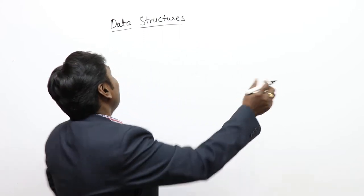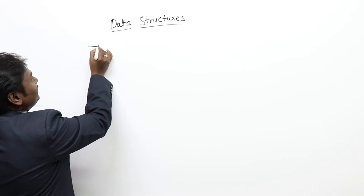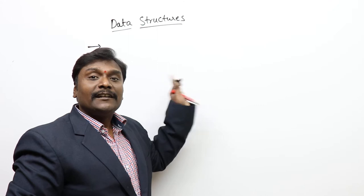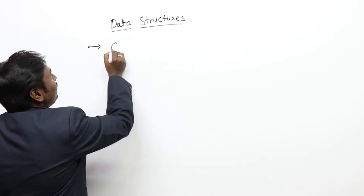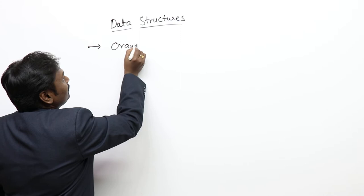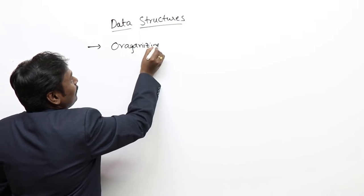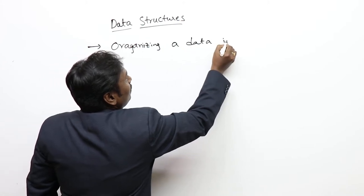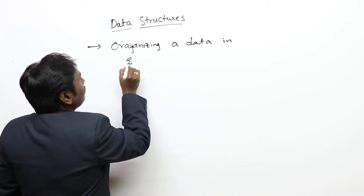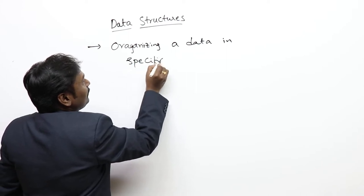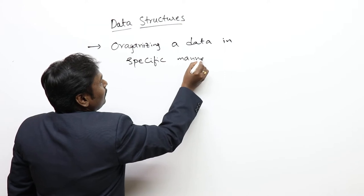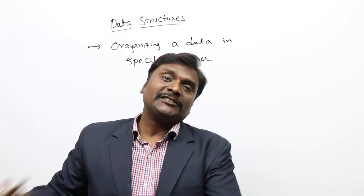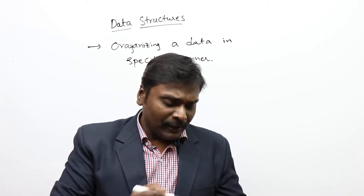So we can define a data structure as a collection of data that is organized in a specific manner. Data is organized in a specific structure, and as per our convenience we can describe the data structure definition in this way.